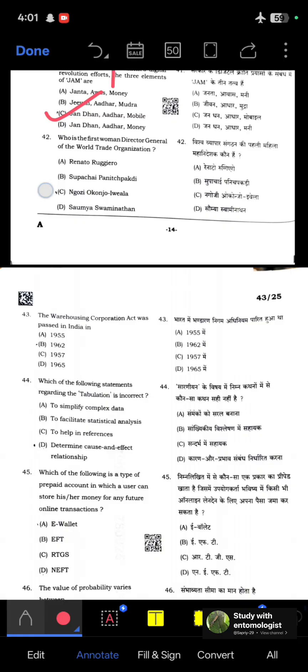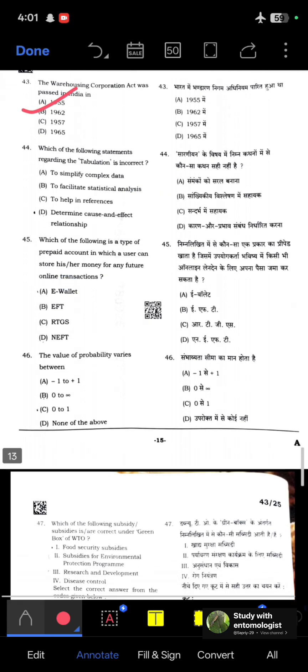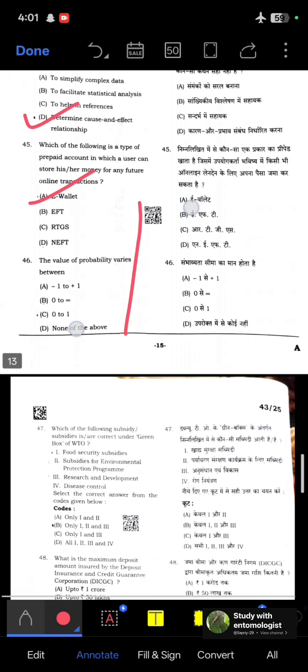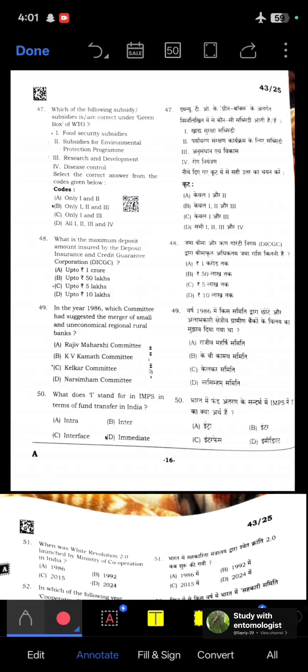The Warehousing Corporation Act was passed in India in the year 1962. Which of the following statements regarding tabulation is incorrect? Tabulation determines cause and effect relationships. That doesn't help in this. Which is a type of prepaid amount account in which a user can store money for any future online transaction? Known as e-wallet. The value of probability varies from 0 to 1.